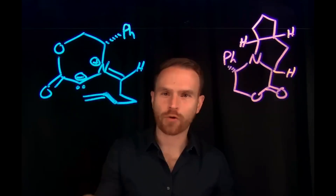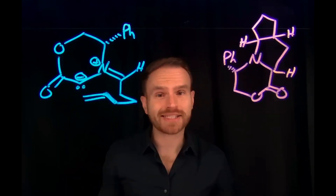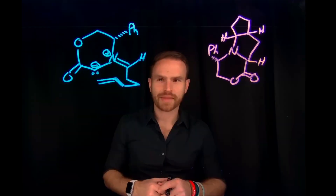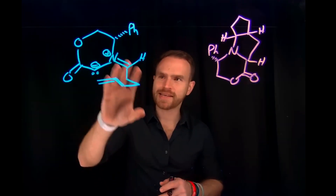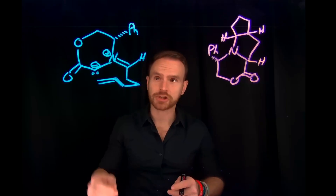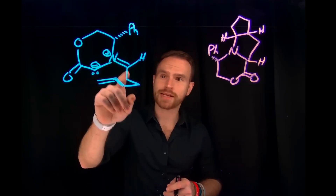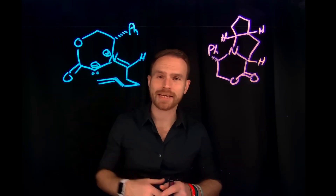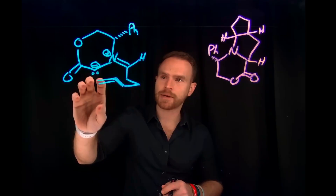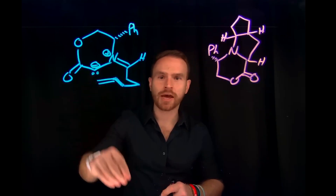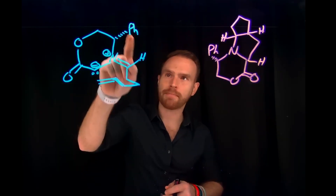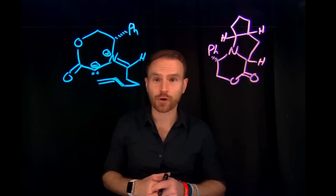I drew it in this formation so that you can see exactly how these electrons are moving throughout the system. And I drew it in this conformation because this is actually the preferred conformation where we've generated an E iminium ion, where this side of the chain is coming in this direction to inhibit the non-covalent interactions that might occur with this phenyl ring.